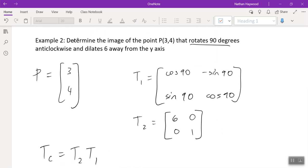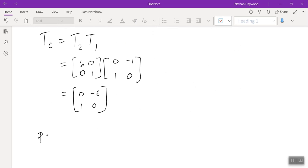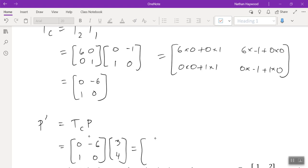I didn't actually read what it wants us to do. It wants us to find the image, so it wants us to find P dash. So now we do T_c times P to find P dash. So if you think about this visually, it started off at three, four here. What happened to it first? It rotated. So it went over here. And then it dilated all the way out here to negative 24, three.